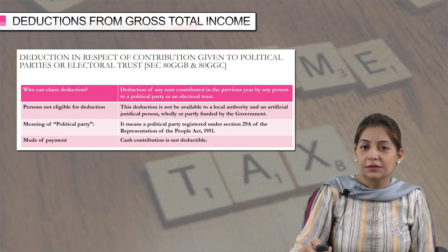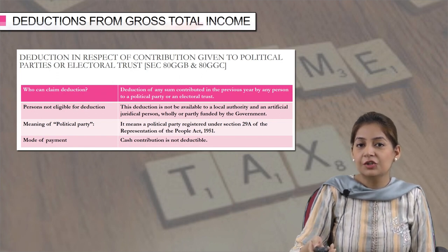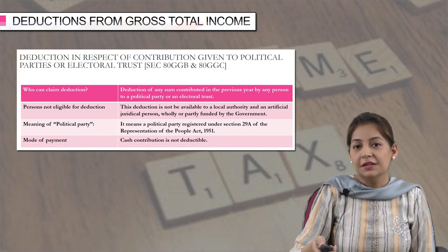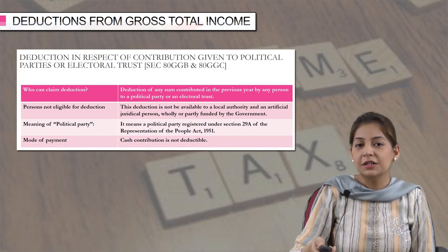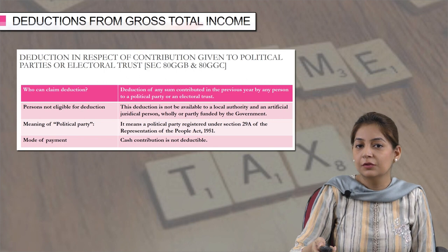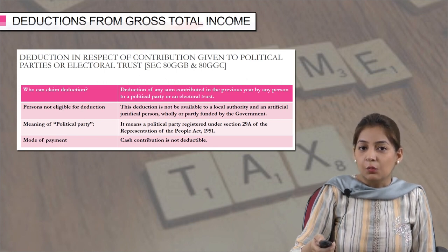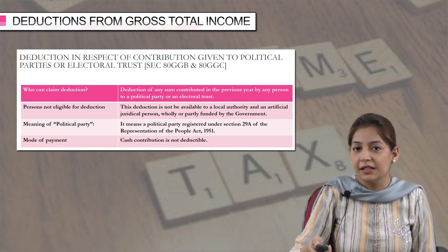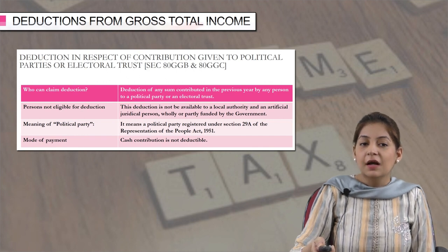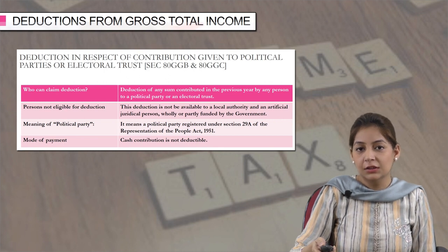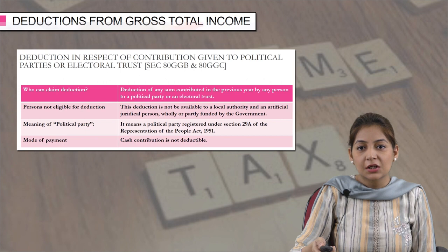Next are sections 80GGB and 80GGC. The deduction under 80GGB can be claimed only by an Indian company, while the deduction under 80GGC can be claimed by any other person, but that person should not be a local authority or an artificial juridical person which is wholly or partly funded by the government. This deduction can be claimed if you have contributed any amount to any political party. The mode of payment should be online only — if the contribution is done in the form of cash, the amount is not deductible.